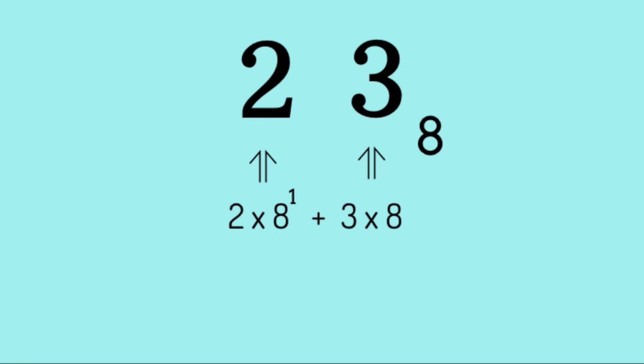For the digit 3, we have 3 times 8 to the power of 0, since there are no digits in front of the 3. Summing these values, we get 2 times 8 plus 3 times 1, which is equal to 16 plus 3, which is equal to 19.